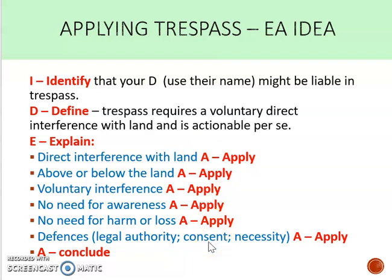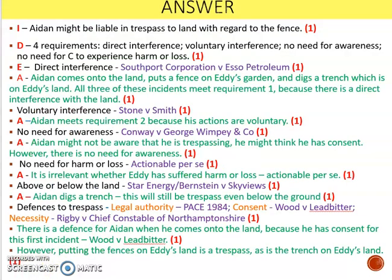This structure also has a bonus in the exam: if you did a standard IDEA with a big chunky explanation and then all your application at the very end and you ran out of time, you'd have missed out on all your AO2 application points. By doing explain-apply throughout, you're balancing out your marks, and if you run out of time at least you'll have gained some AO2. On this slide I've got a bullet point answer to the Aiden and Eddie scenario — you can ignore the red points, they're just a rough mark scheme.